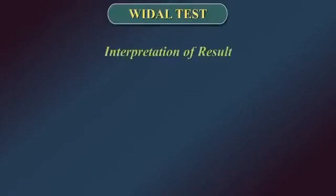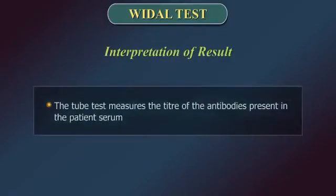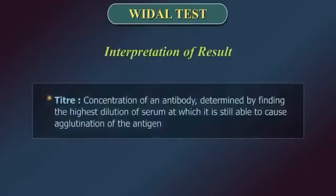Interpretation of result. The tube test measures the titer of antibodies present in the patient serum. Titer is defined as the concentration of an antibody determined by finding the highest dilution of serum at which it is still able to cause agglutination of the antigen.